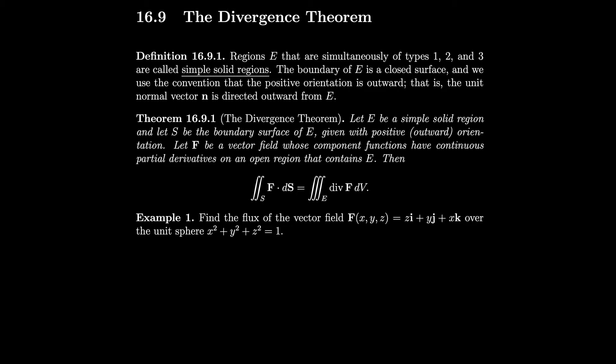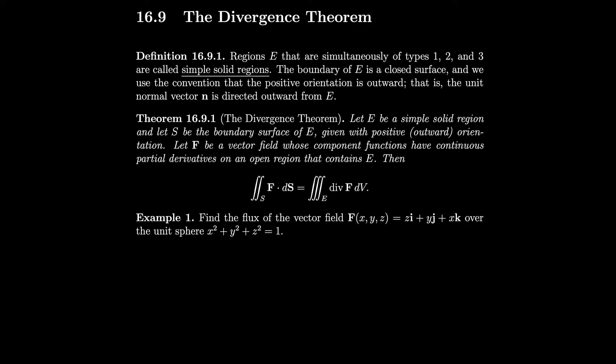We use this definition to come up with the divergence theorem for simple solid regions, which is proved similarly to the way you could prove the special case of Green's theorem. You take the simple solid region E, project it into each of the x, y, and x-z planes, and prove that the triple integral of the divergence equals the surface integral f dot dS. You split the triple integral of divergence into integrals over each partial derivative, make each one its own triple integral, and then prove that each is equal to the surface integral.